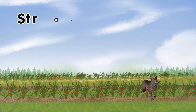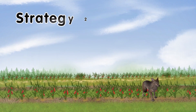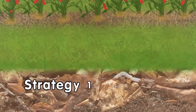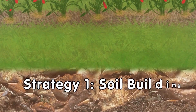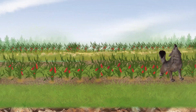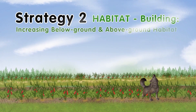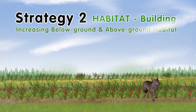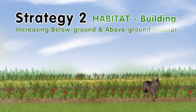Let's look at strategy two. Strategy one was soil building, and we looked at the specifics of soil building. Now let's look at habitat building — increasing below and above ground habitat. Six farms use some of the 14 habitat building tools and strategies on the list you have.